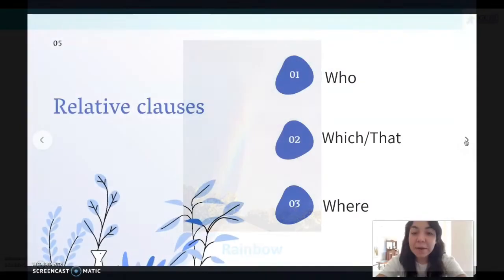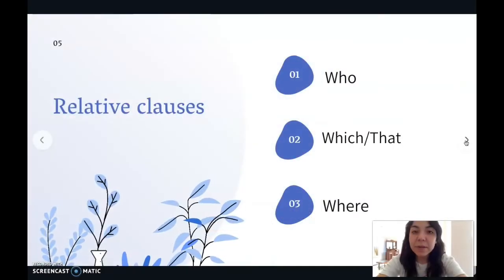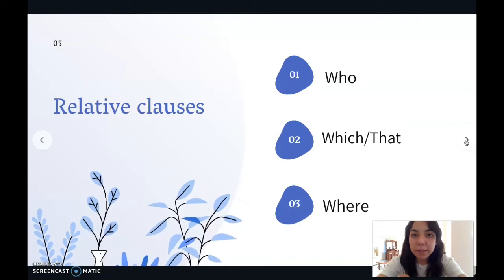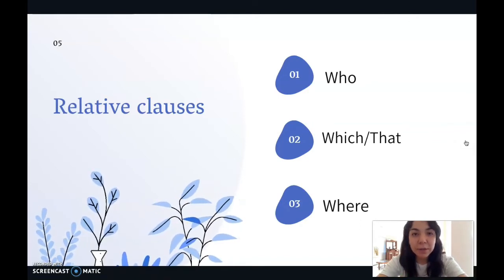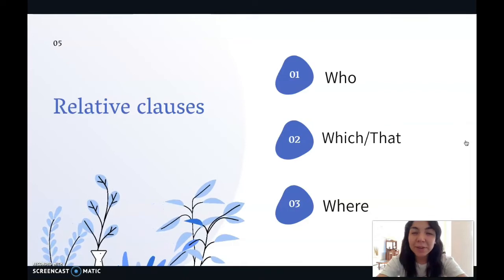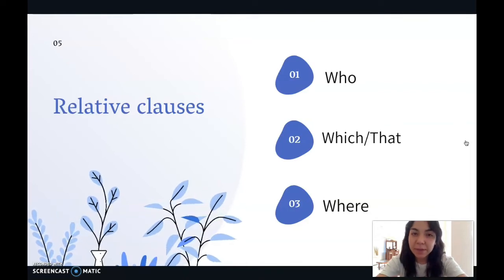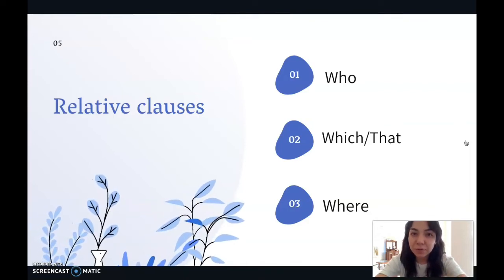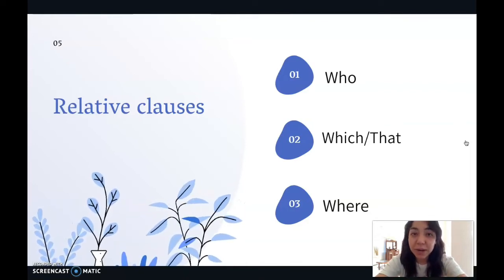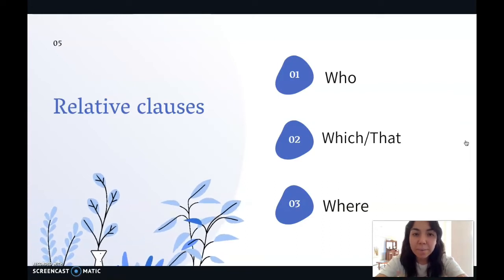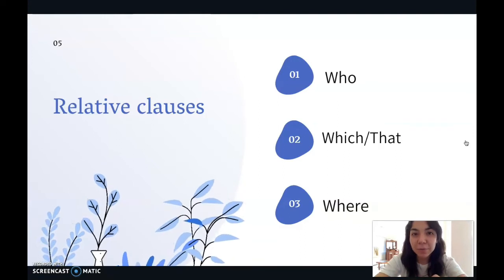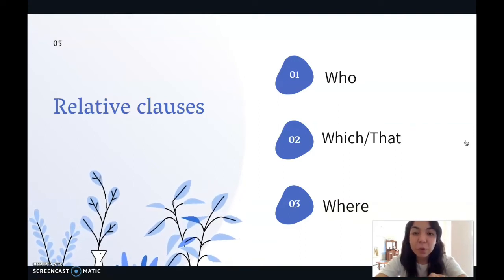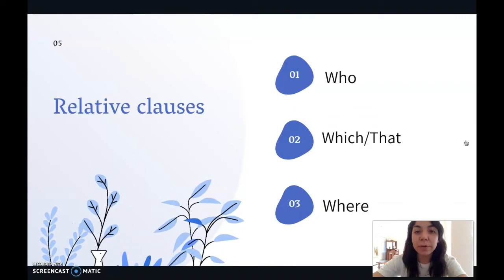And that's it. Now I want to start giving you some details about relative clauses, which are used for different things and are known as a kind of adjective. We're going to discover the real use of these words. I know you've already used them somehow, but maybe we've never gone deeply into the purpose. So we're going to have: who, which, that, and where.